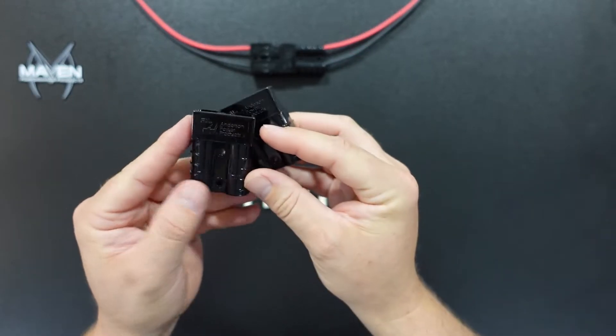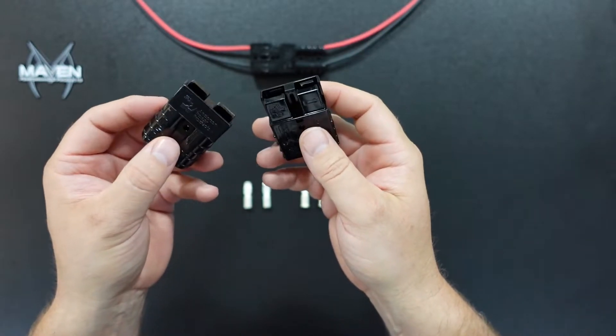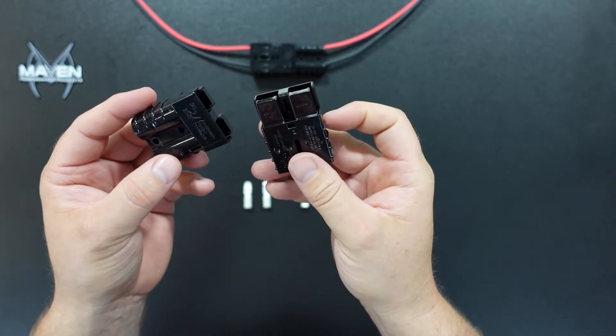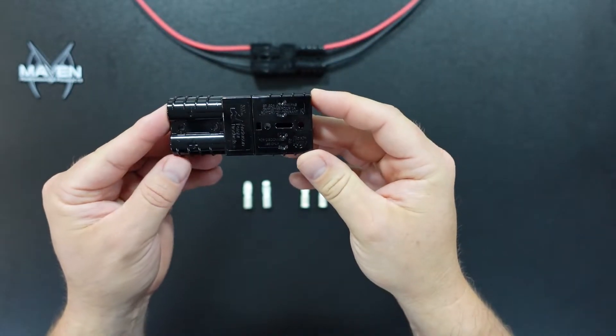So you'll see that it is marked positive and negative on both sides. You'll hook up your power and ground accordingly, and the one just flips over, and they connect like this once the terminals are in.